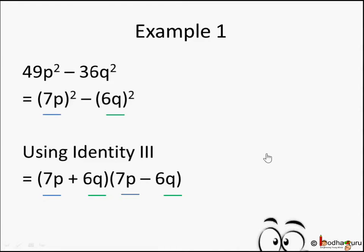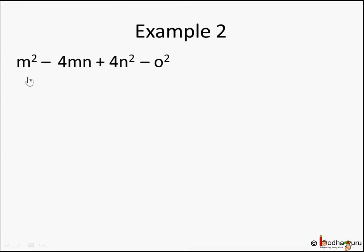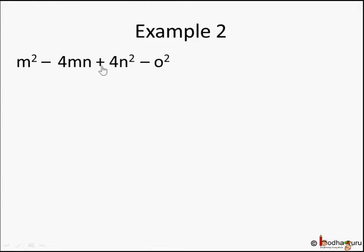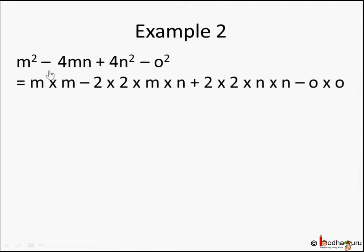Let's take another example: an algebraic expression of four terms. When you see this kind of expression, try to find commonality. The terms m² - 4mn + 4n² seem to use Identity 1 or 2, and since there is a negative sign it will be Identity 2. The term o² could use Identity 3.